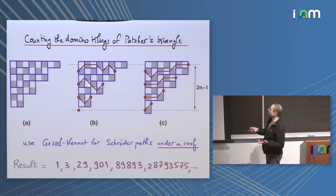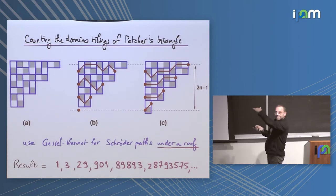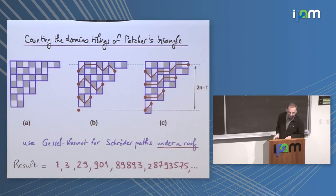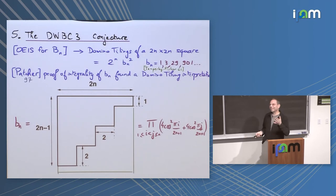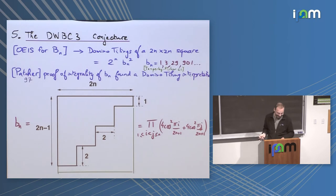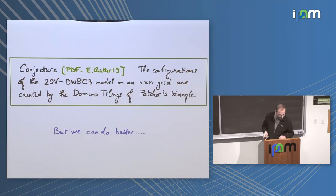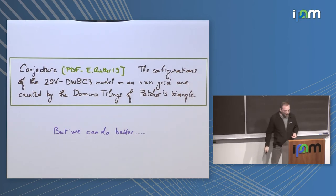Counting these configurations uses the same Schröder paths — it's the same domino tiling, but now these are Schröder paths under a roof, meaning they can't go above a certain line. There's a roof that limits the Schröder paths. Using Gessel-Viennot you count these, and you can write it as a determinant. So here is the conjecture: the configurations of the 20-vertex model with domain-wall boundary condition 3 are counted by the domino tilings of Pachter's triangle. That's open — go for it.